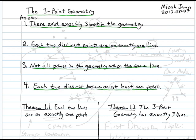The first thing to note is that there are three undefined terms in this geometry. The first undefined term is point, the second is line, and the third, which is kind of hidden, is actually the word 'on'. These are things that the axioms give no indication of their meaning — we just agree to treat them as objects in and of themselves and accept that there is no definition.